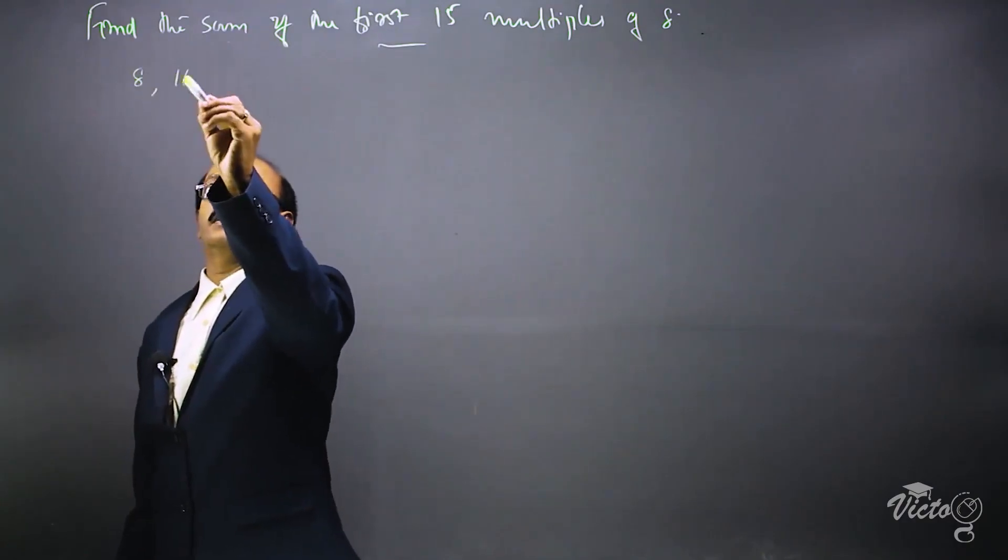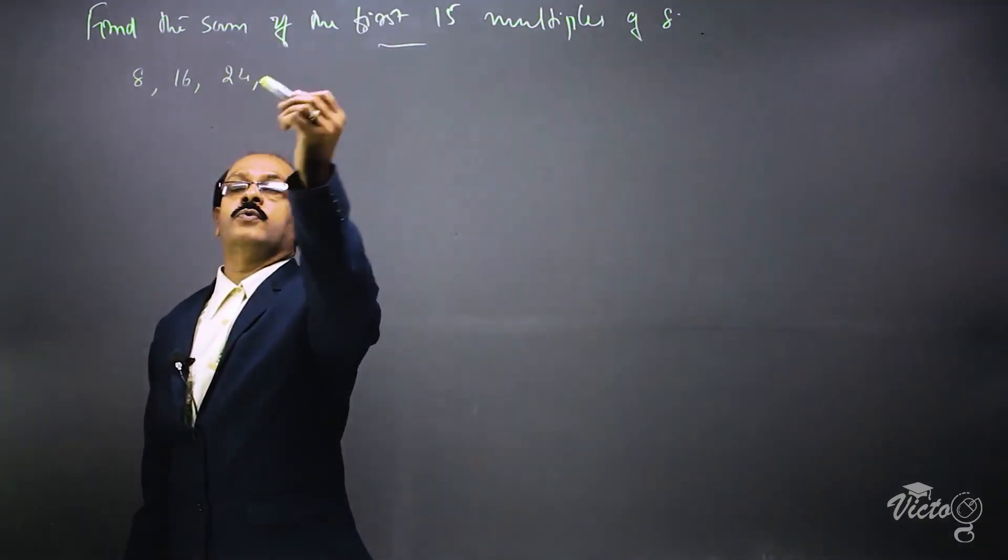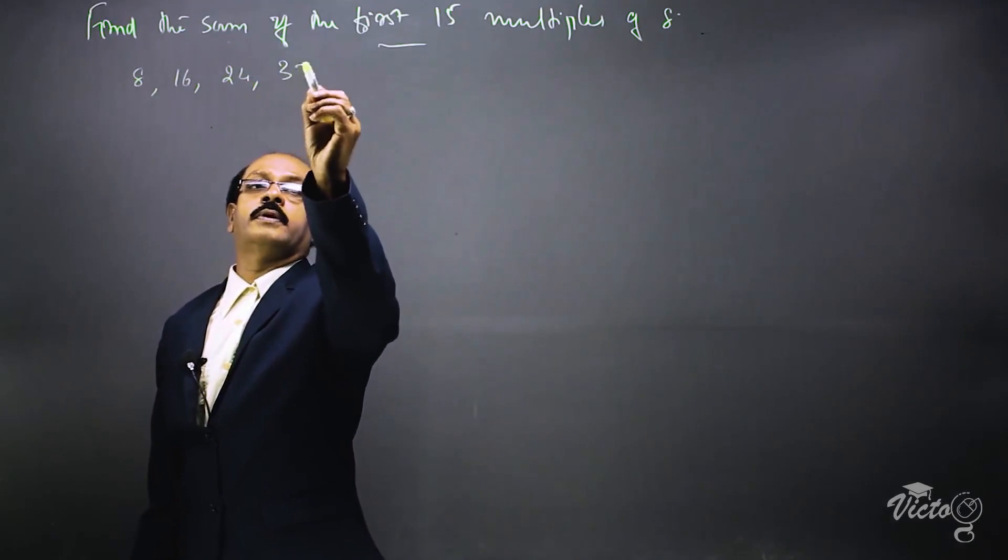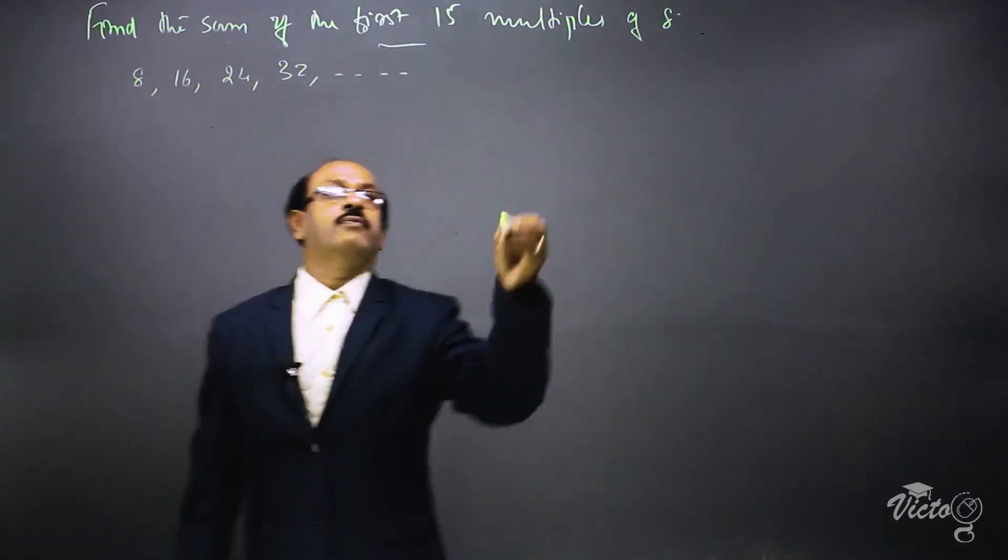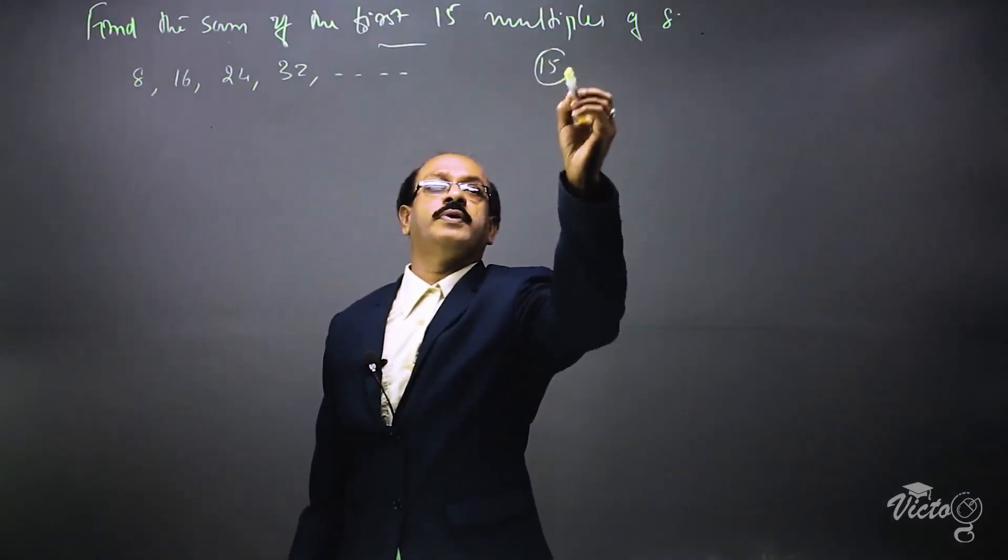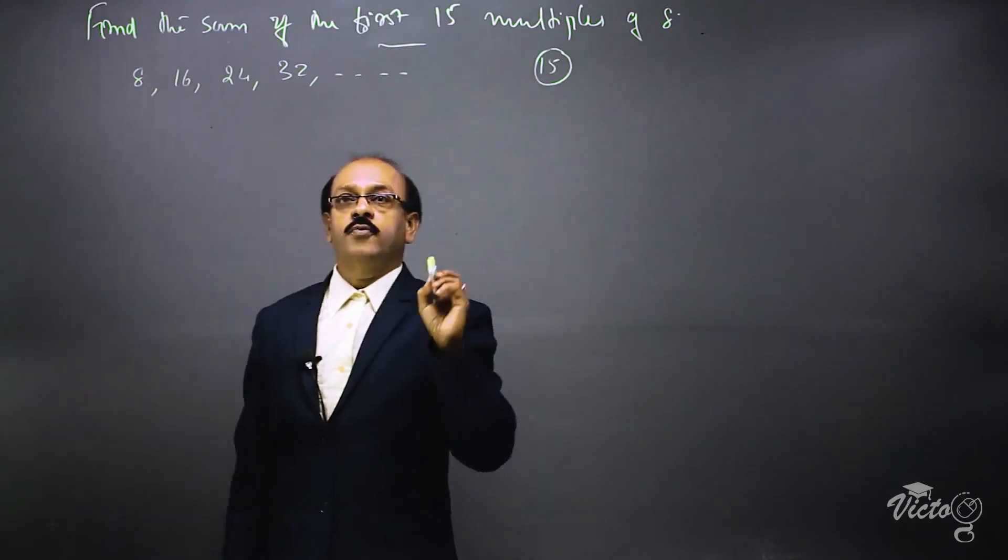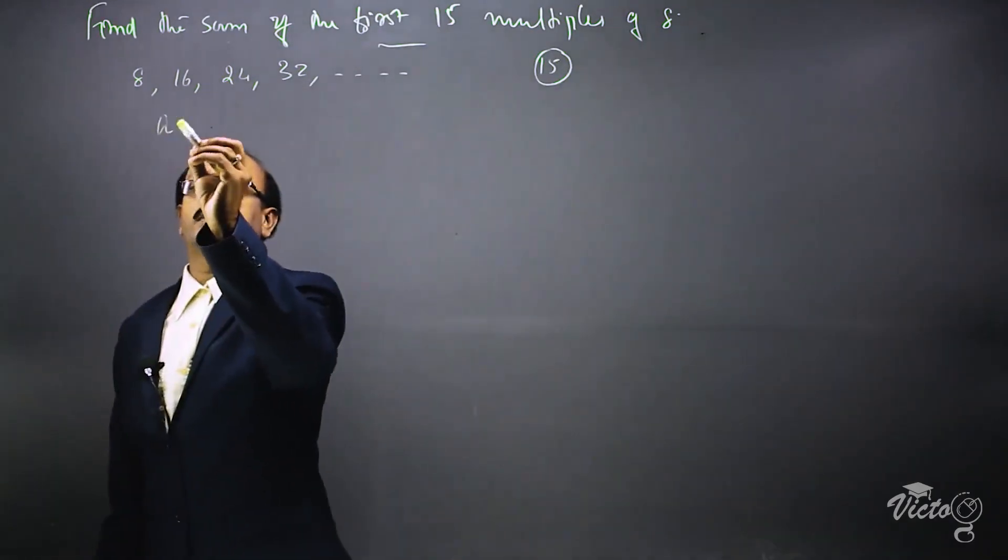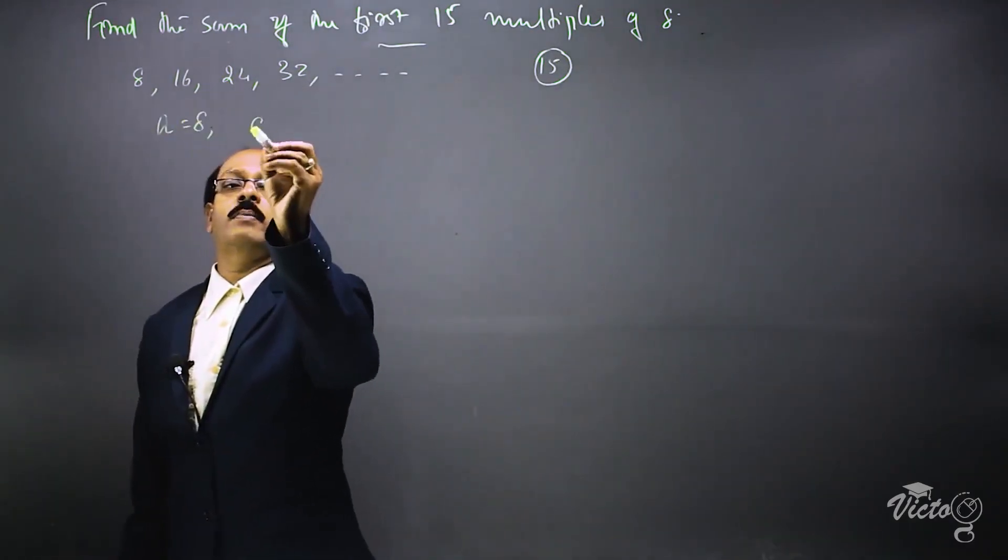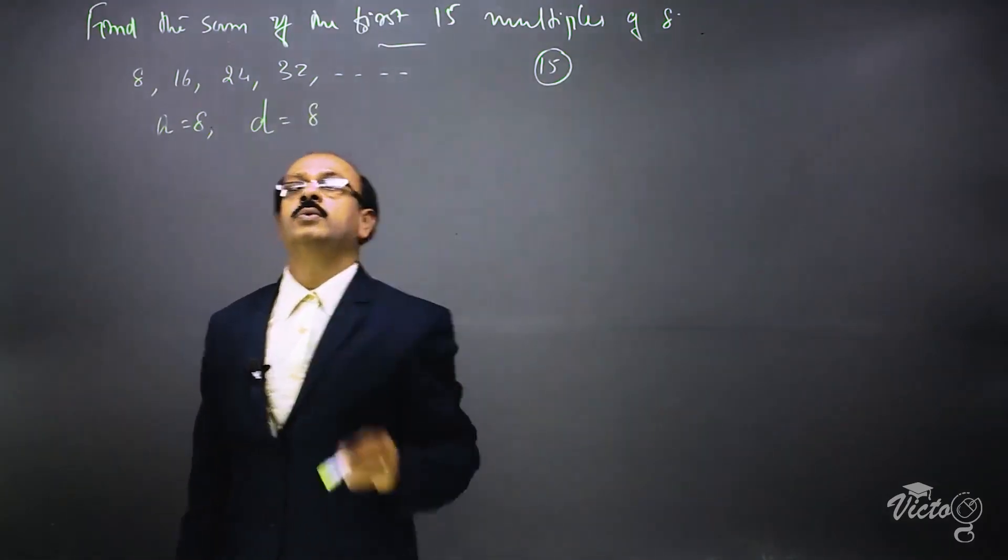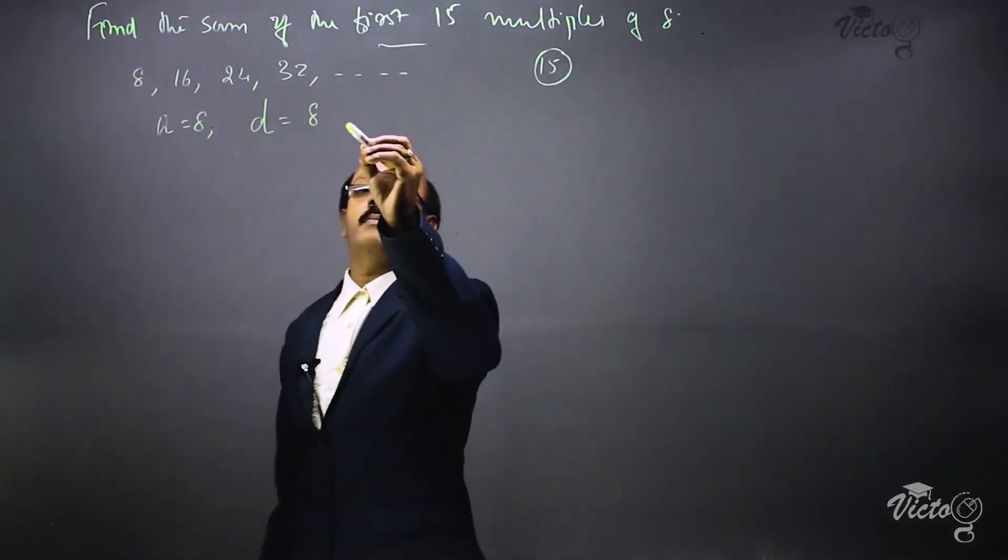We can start from 8, then 16, 24, 32, and so on. We have to find the sum of 15 terms. Now the first term a is equal to 8, and the common difference d is also equal to 8, and number of terms n is equal to 15.